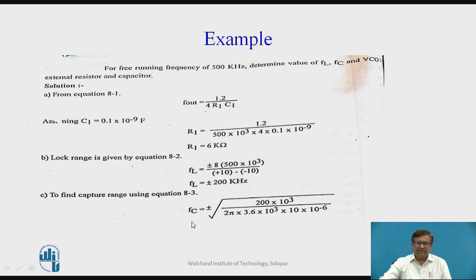We find out FC is equal to plus or minus under root FL divided by 2 pi R int C2. Here we are taking the value of C2 is equal to 10 microfarad which is very large enough to stabilize the output frequency of the VCO.